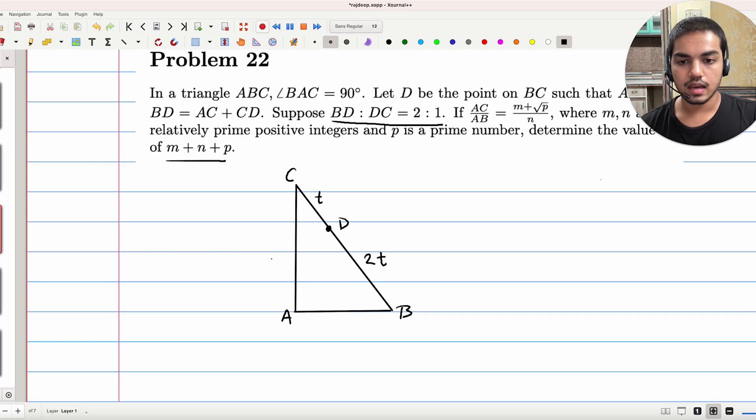And let AB be equal to X, right? Then because of the condition AB plus BD is equal to AC plus CD, we're forced to let AC is equal to X plus T. Right? Because you want AB plus BD, which is X plus 2T, to be AC plus CD. So this has to be X plus T.